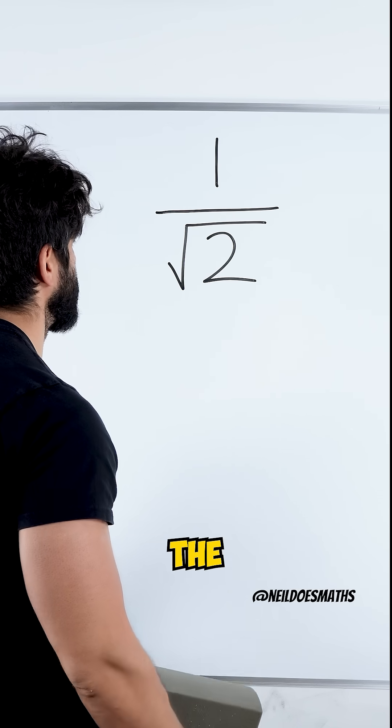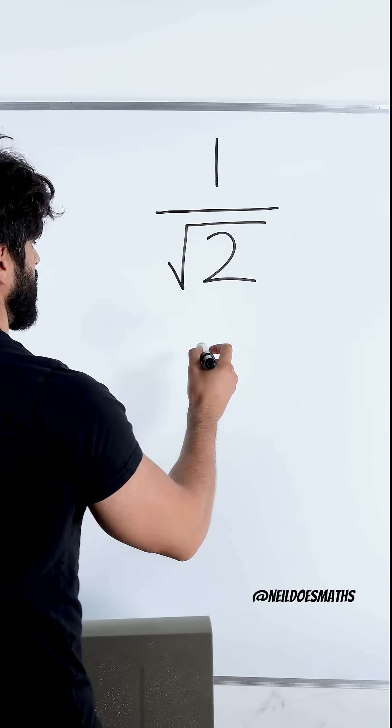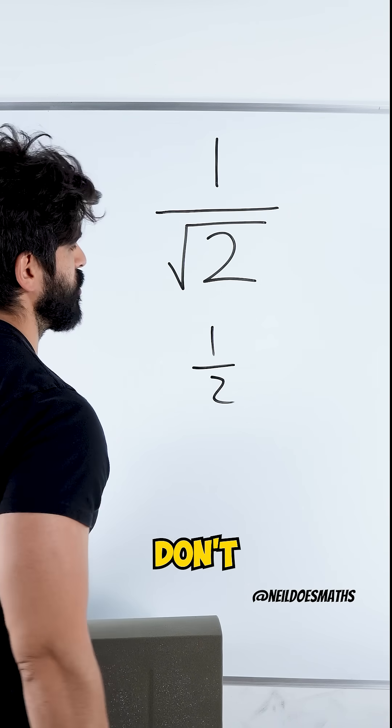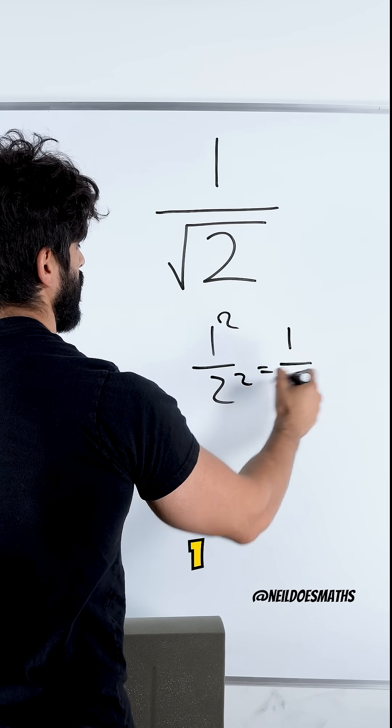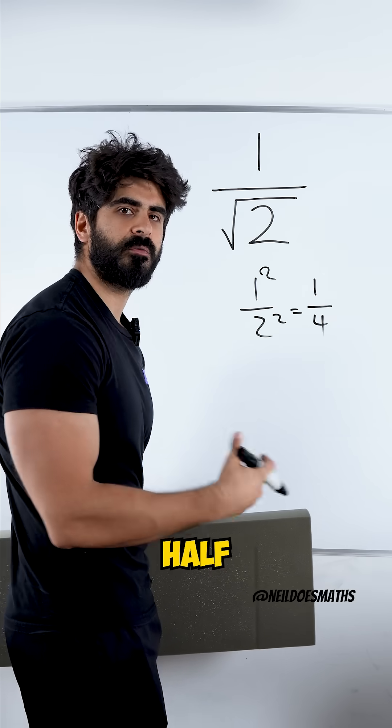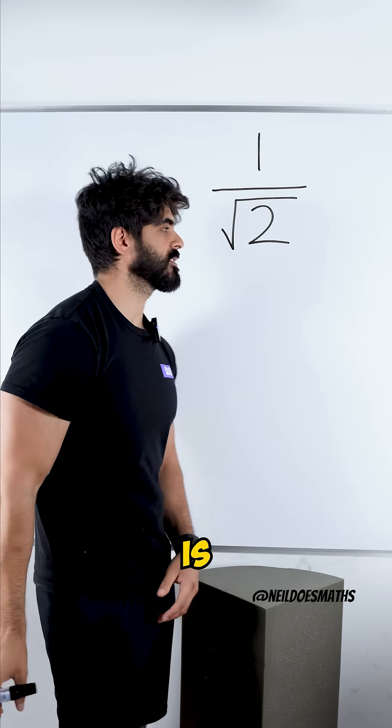Squaring it changes the number completely. For example, if I take one half and you say, okay, why don't you just square it? If you square the top and the bottom, one squared is one, two squared is four. A half and a quarter are not the same.